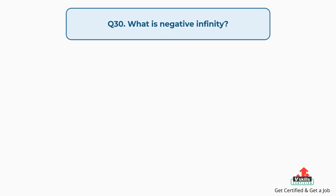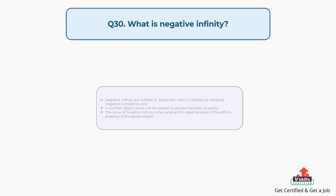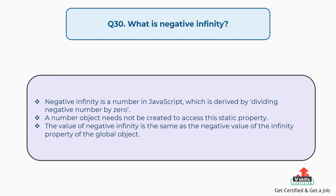Question number thirty: what is negative infinity? Negative infinity is a number in JavaScript which is derived by dividing a negative number by zero. A number object needs not be created to access this static property. The value of negative infinity is the same as the negative value of the infinity property of the global object.